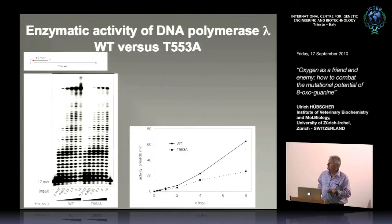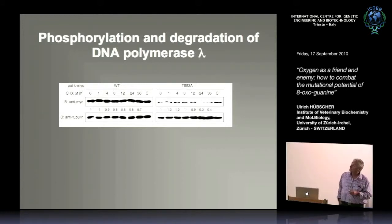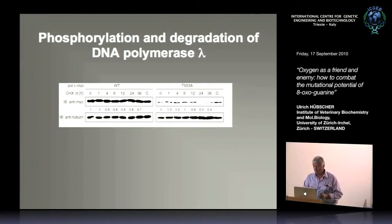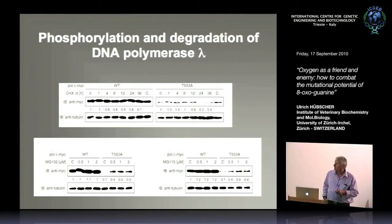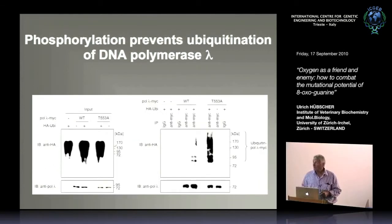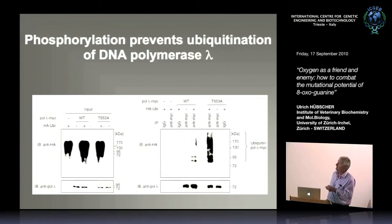When cells are treated with cycloheximide (protein synthesis inhibitor), the non-phosphorylatable protein is very unstable. Adding proteasome inhibitors partly rescues protein stability. This strongly suggests ubiquitination is involved. Indeed, the non-phosphorylatable and non-phosphorylated protein is heavily polyubiquitinated, while the wild-type protein has only low or mono-ubiquitination. Therefore, cell cycle-dependent phosphorylation by CDK2-cyclin A prevents pol lambda from proteasomal degradation, likely keeping it active as a repair protein.